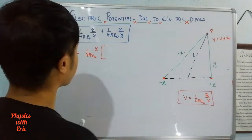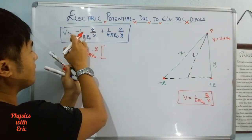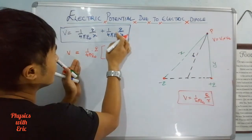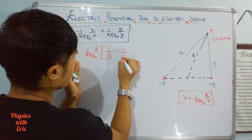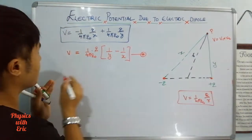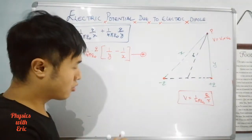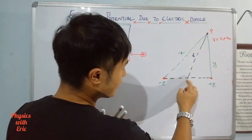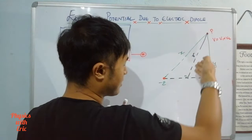Taking the common factor out, we get 1 by 4 pi epsilon naught times Q, then inside the brackets we have 1 by y minus 1 by x. Now we need to find the values of x and y. We'll use the geometric construction — drawing perpendiculars from the dipole charges to find the relevant distances.